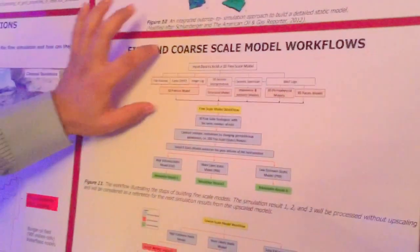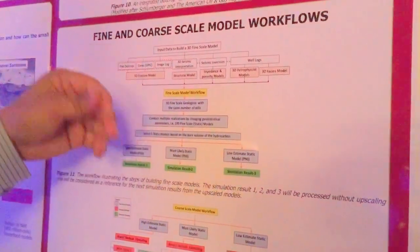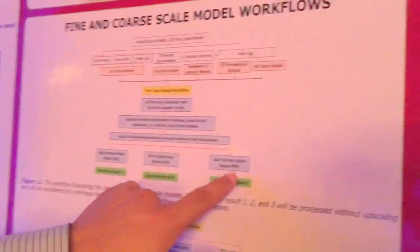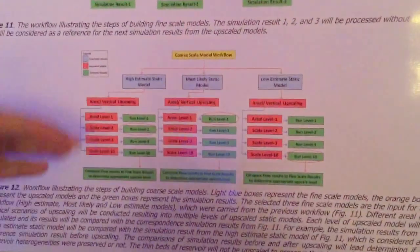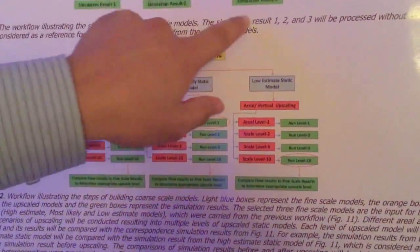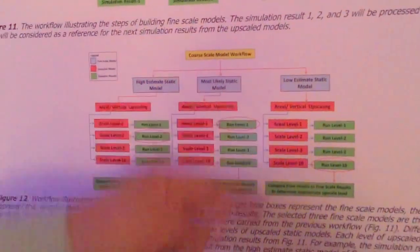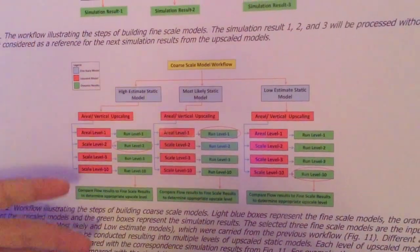Here you have, as I mentioned here, this is the input data for the static fine scale model. And then you conduct different multiple realization and you select the three models only because it's not economic to have all of them. And then you run a simulation, which is what engineers do, which is I'm going to do that. And then you carry those three models, P10, P50, P90, and you run different upscaling and compare those results with the fine scale model.